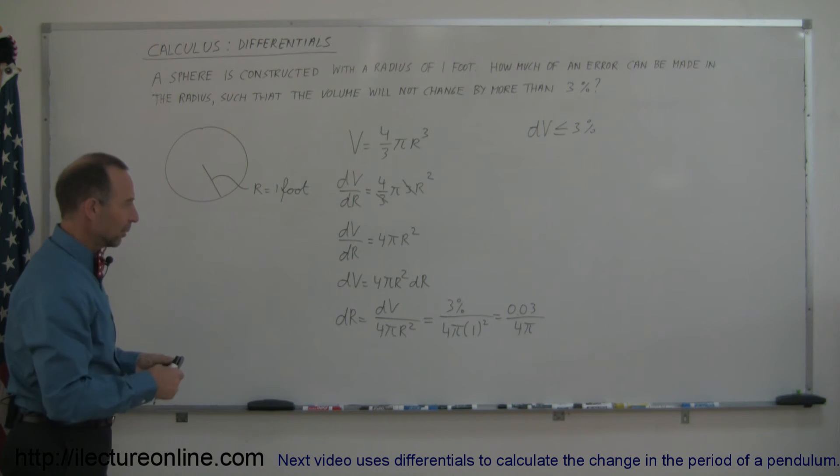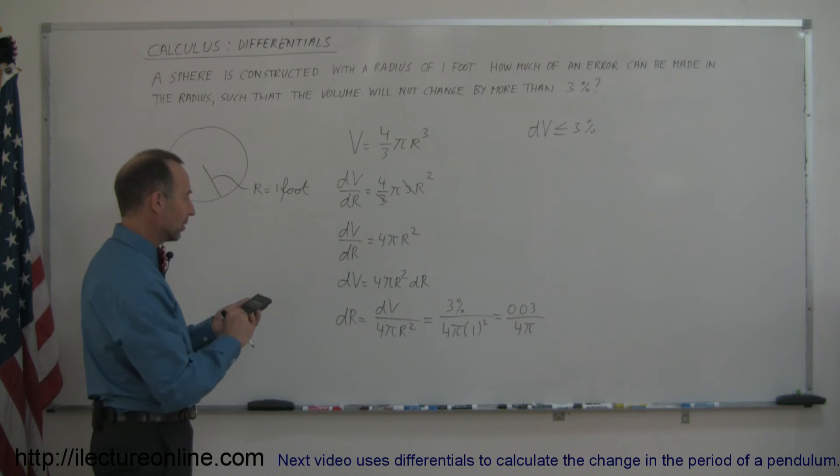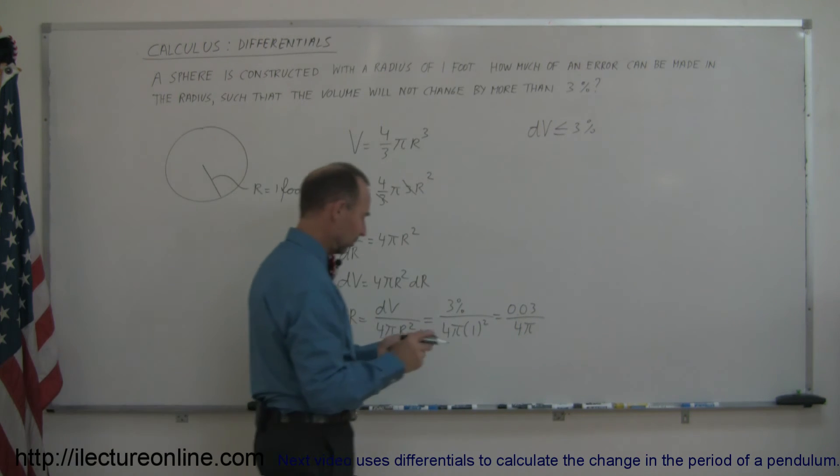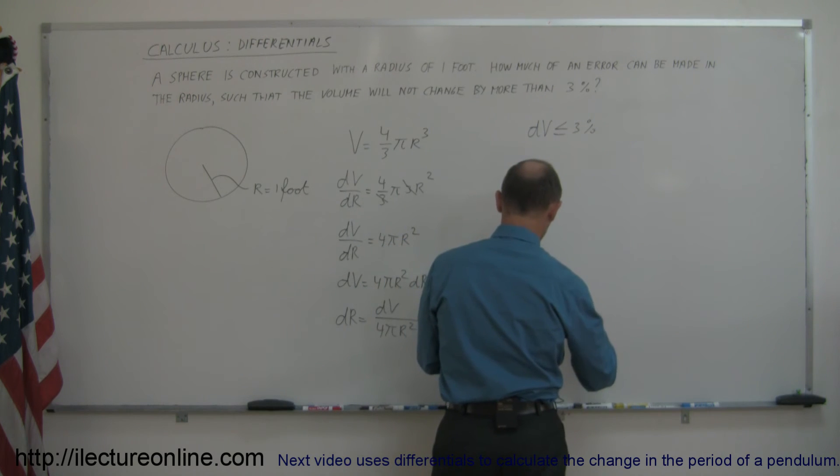And then with my calculator we can see how big of a change we're allowed to make in r. So 0.03 divided by 4 divided by 3.14159 equals, so we have an error no bigger than 2.39 times 10 to the minus 3.